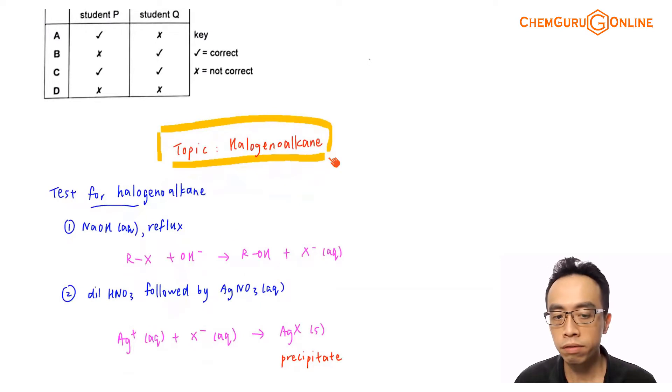Involving tests for halogenoalkane, by right, what we should do is, first thing, we need to use NaOH aqueous reflux to substitute out the halogen. Because by right, the carbon-halogen bond, the CX bond, is relatively stable, so we actually need a substitution reaction to kick out the halide. So usually what we will use is NaOH aqueous reflux, OH- will come in, kick out your X-, basically the product is forming an alcohol, and you kick out the halide.